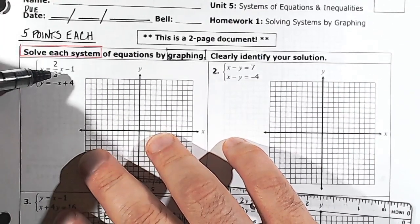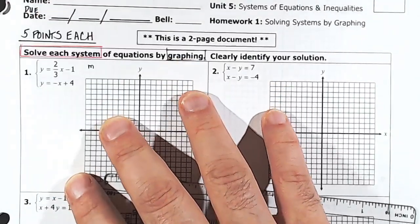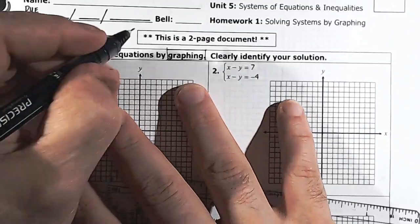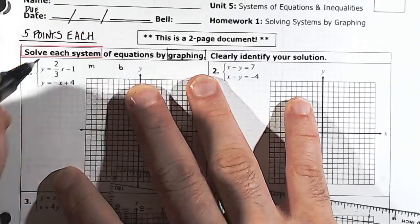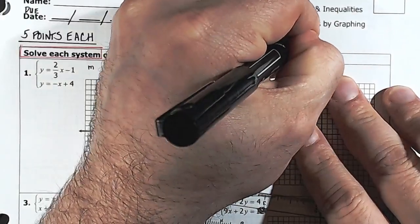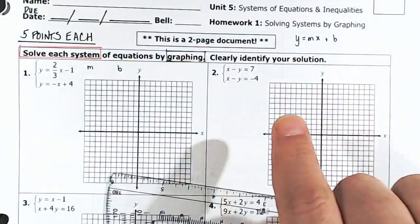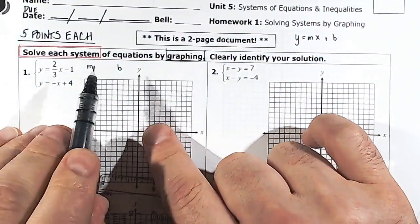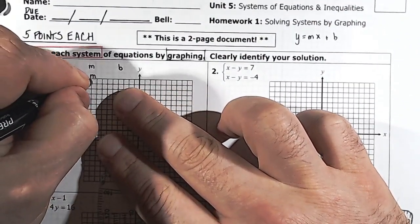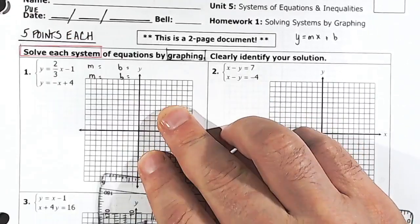And that's called slope-intercept form. So this number sitting in front of the x, that's called the slope, and we call that letter m. And then we have the y-intercept. This is where the line hits the y-axis, and that's what we call letter b. So the full slope-intercept form is y equals mx plus b. So to graph the line, you've got to know what m is, and you've got to know what b is. So both of these equations will have an m and a b. And that's really what we've got to figure out first. What is m and what is b?